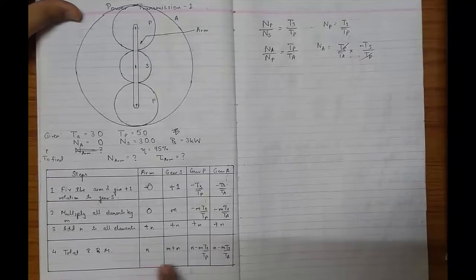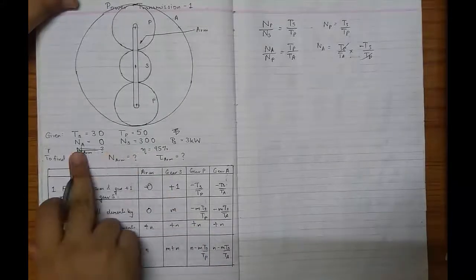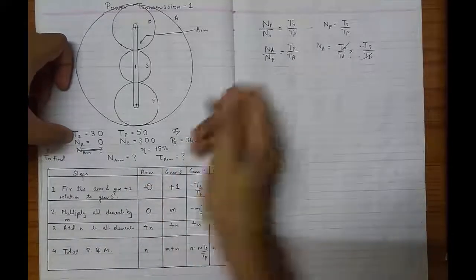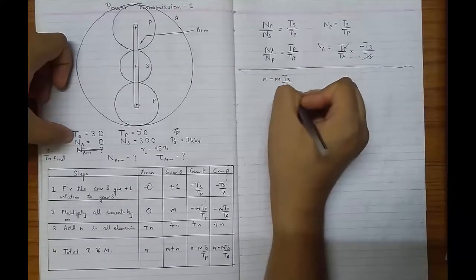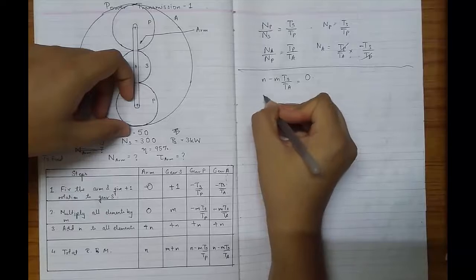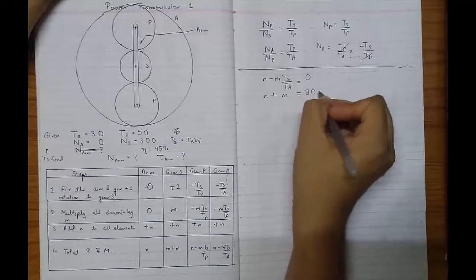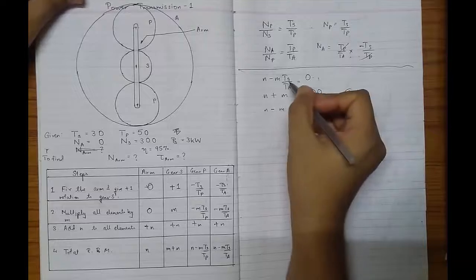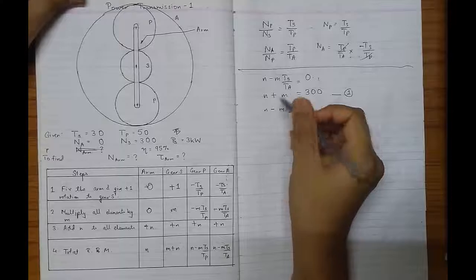Now we have to find the values of M and N. To find these, we require two RPMs. They have given us NA = 0, so the annular equation gives: N minus M × (Ts/Ta) = 0. This is equation two. And NS = 300, so N plus M = 300. This is equation one.